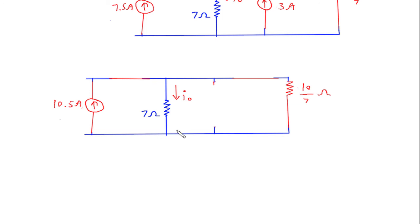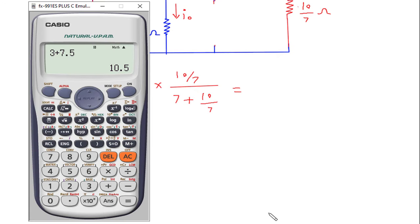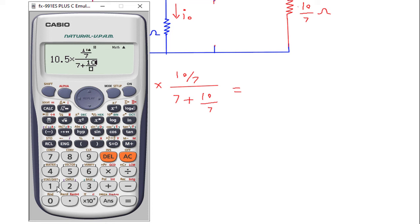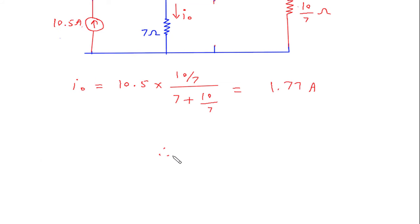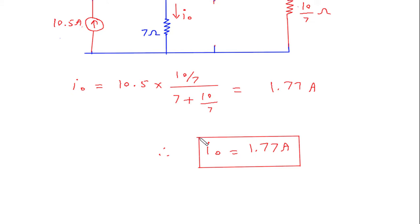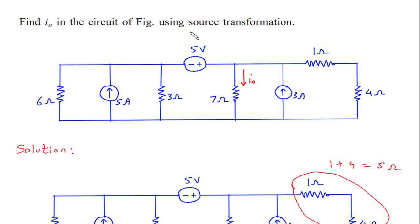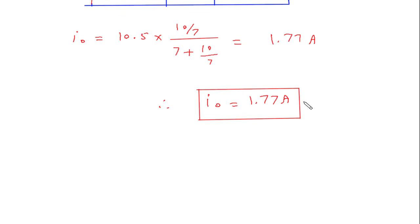Now we have to find IO, so we apply the current division rule. IO is equal to 10.5 into (10/7) divided by (7 plus 10/7), which gives 1.77 Ampere. Therefore IO equals 1.77 Ampere using source transformation.